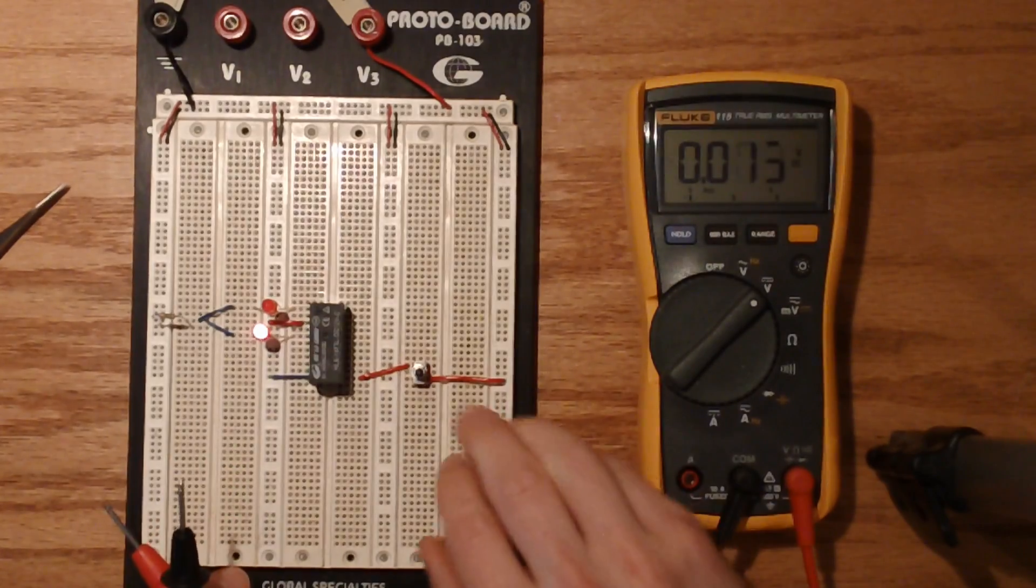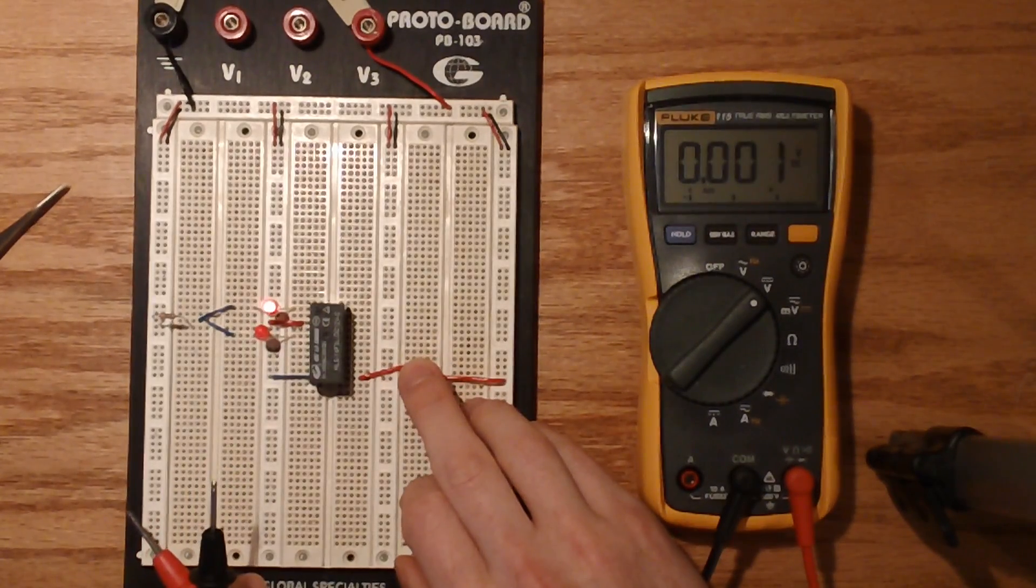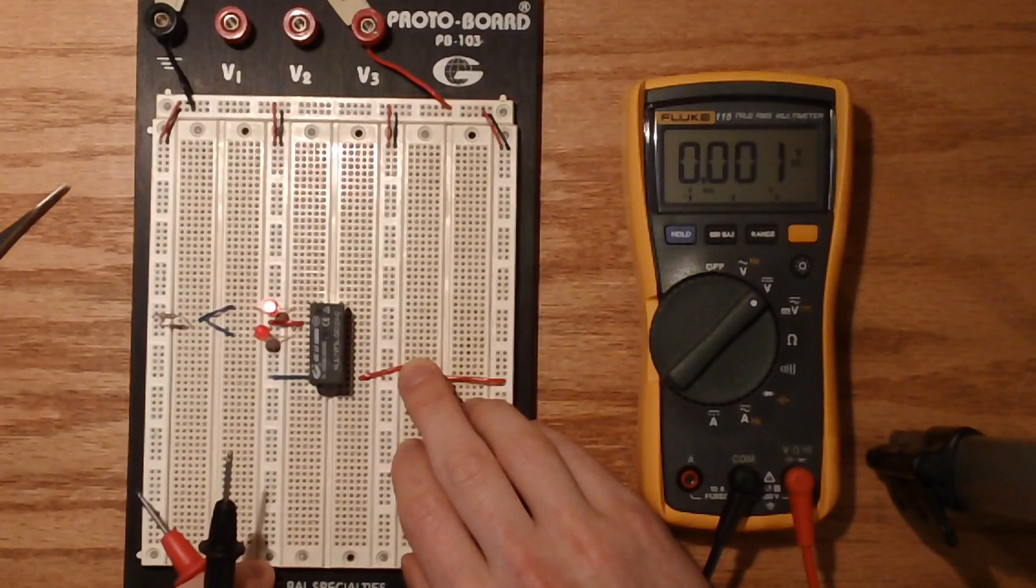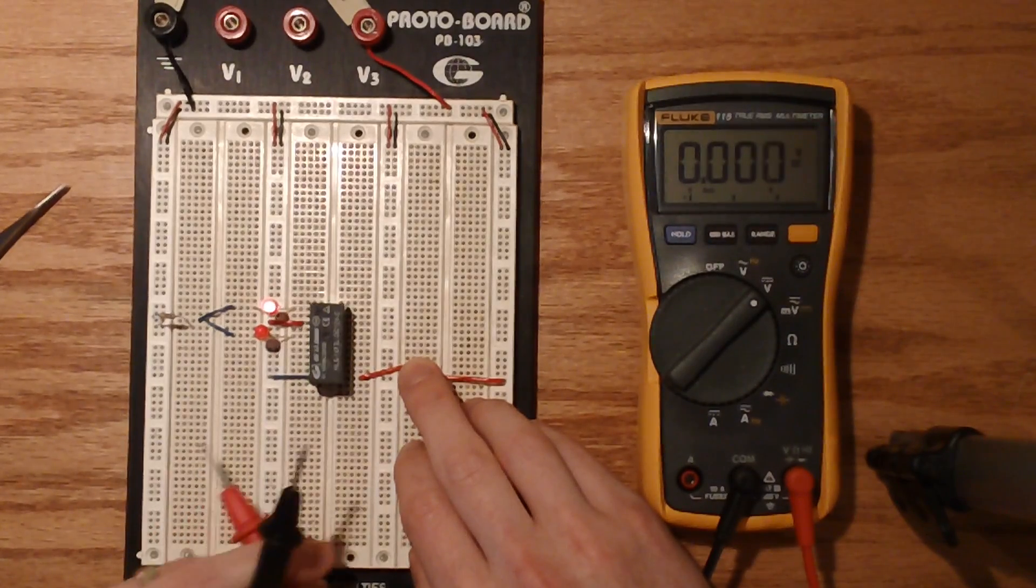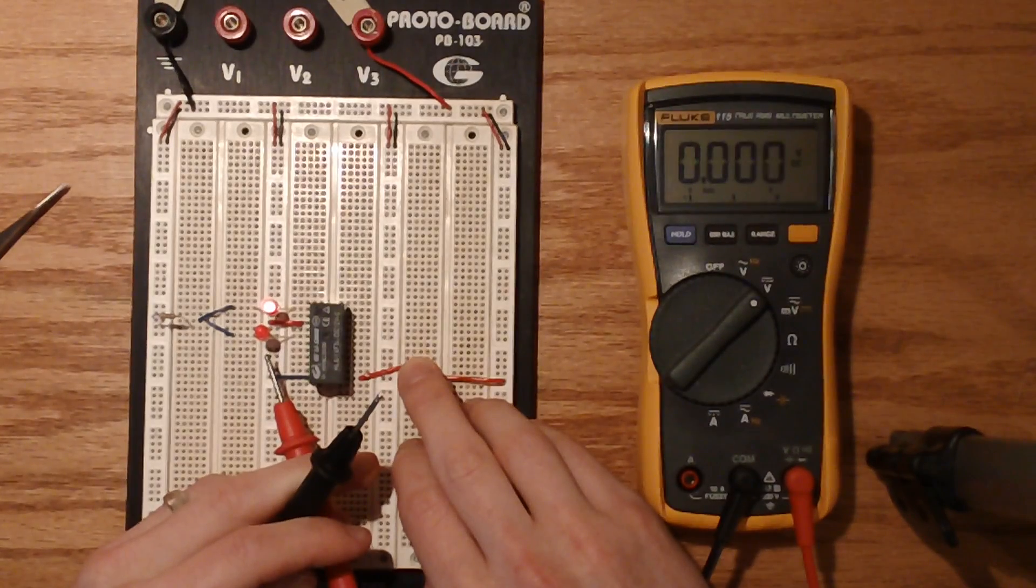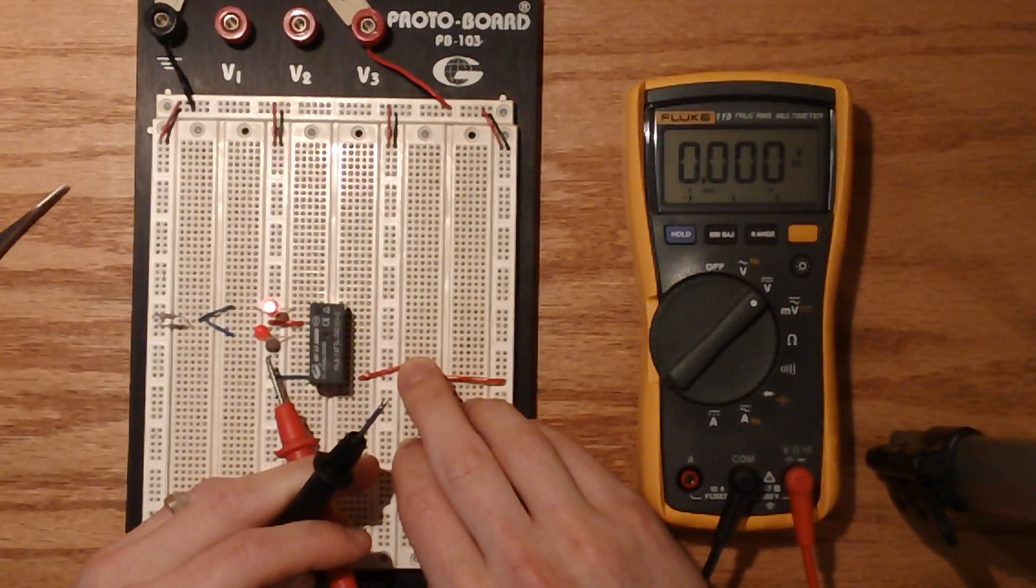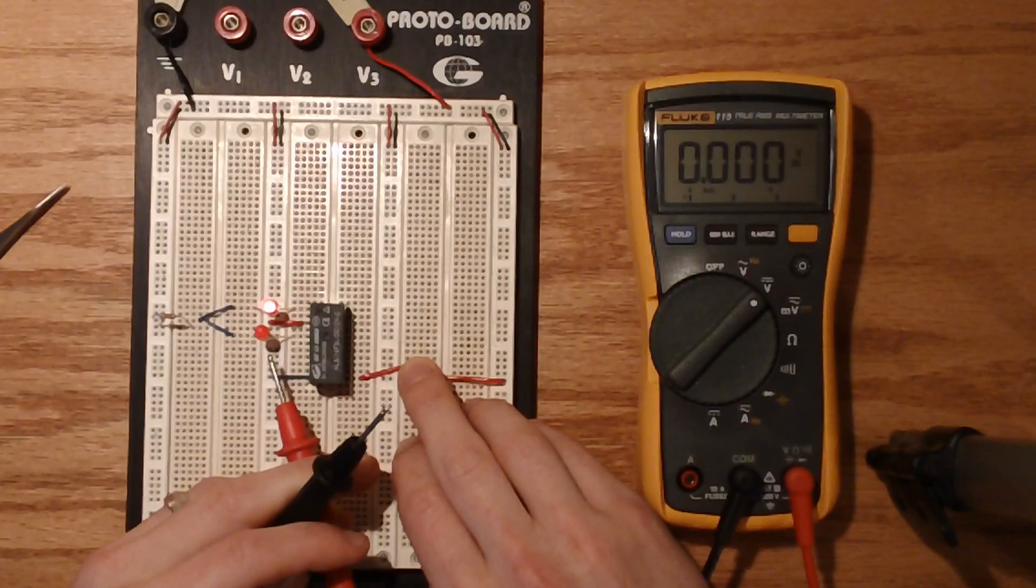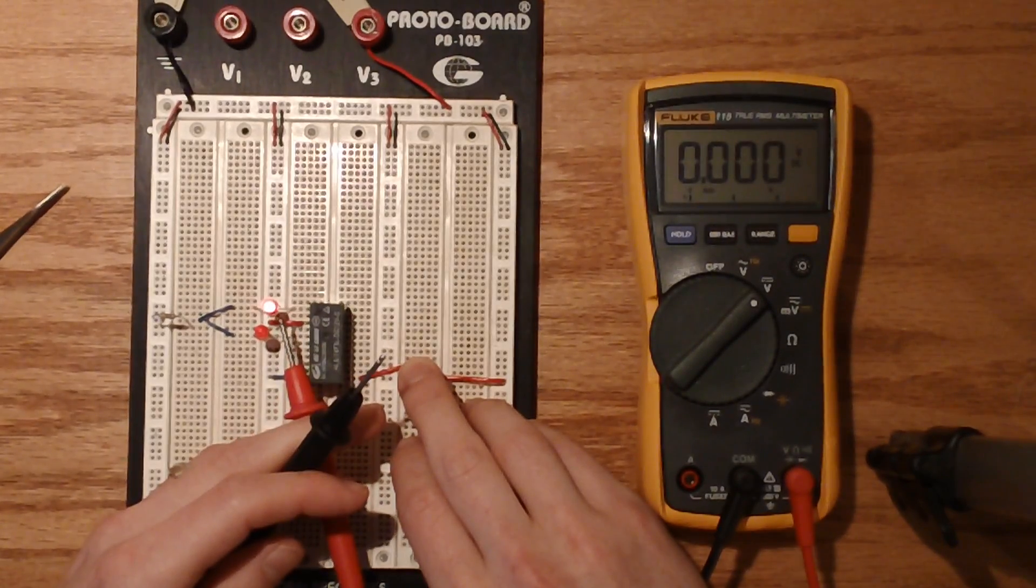And so likewise if we push our switch, I can't push the switch and measure unfortunately, but basically this LED should now have zero voltage flowing through it, or not flowing through it, but zero voltage being applied to it. And the 2.2 should be now applied towards that one.